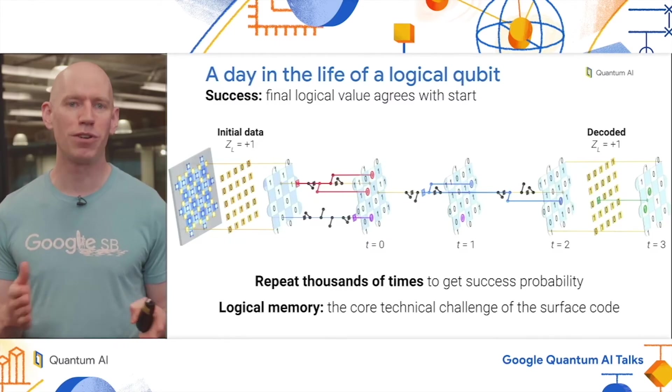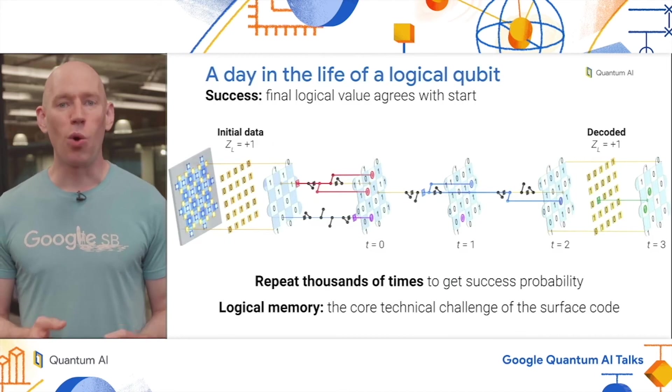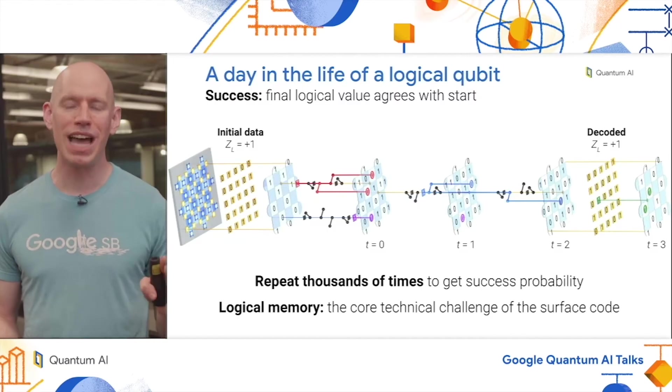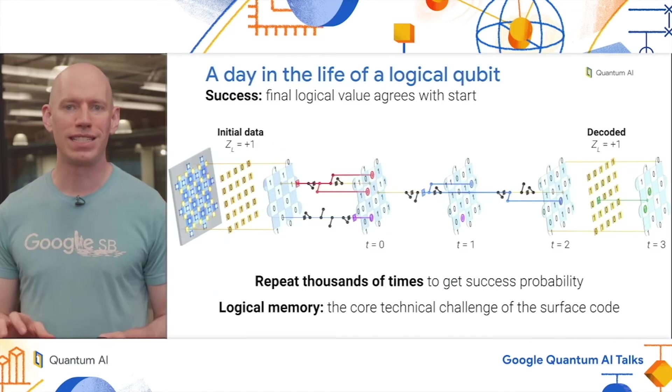We can repeat this experiment many thousands of times to accumulate statistics and get a success probability. We can also do this experiment for different durations, different numbers of cycles. This process of logical memory is the core technical challenge of getting the surface code to work. This might be counterintuitive because in the physical qubit world, we're used to thinking of the two qubit gate as being the hardest part. But if you're running the surface code, running a logical CNOT gate is not very different from running memory, just changing a few things at the boundaries of your logical qubits. So we're really focusing on getting memory to work well as our core technical challenge.